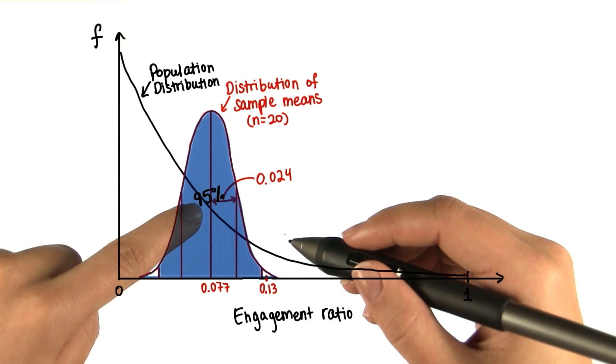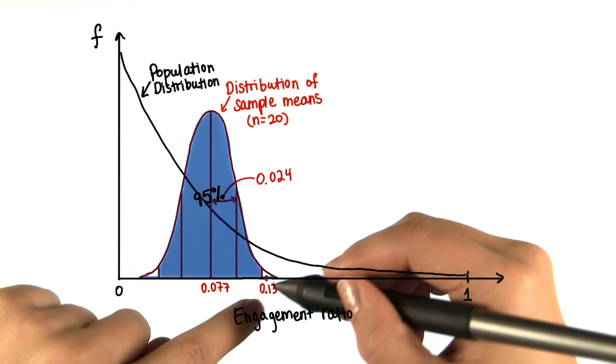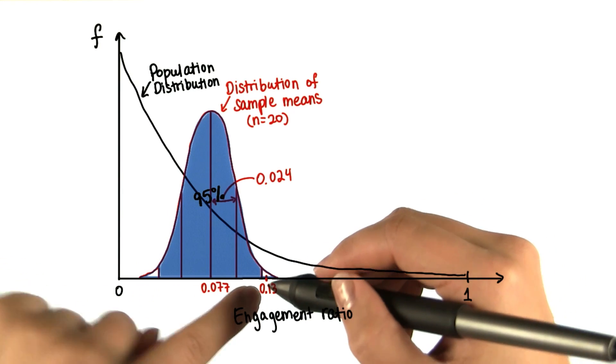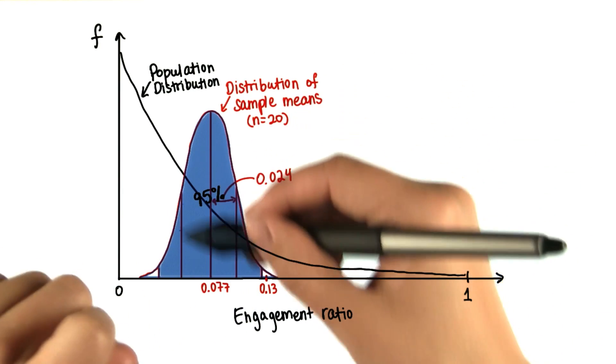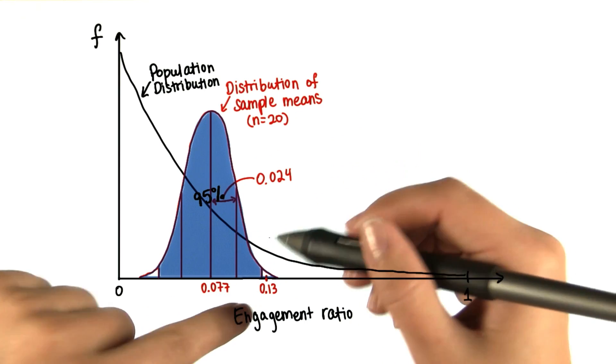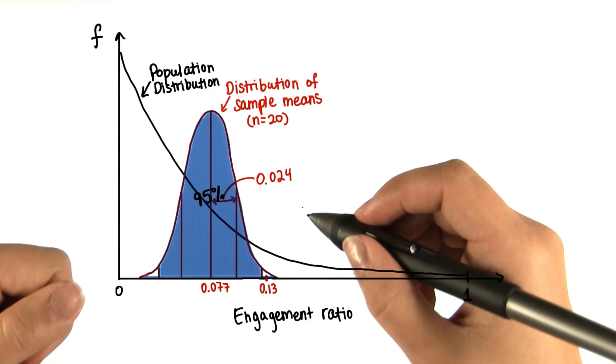And with a 95% confidence interval, we're assuming that this sample mean is one of the 95% of sample means that will be around the true population mean.